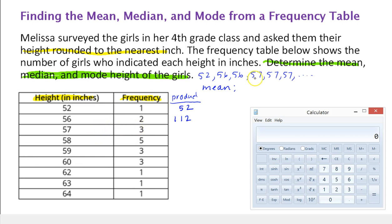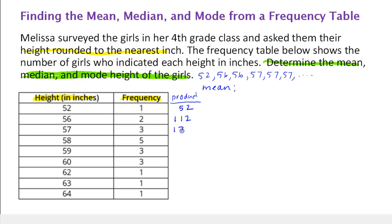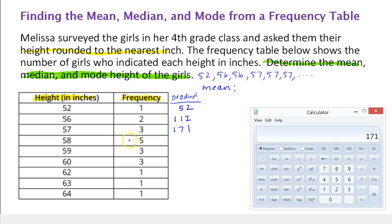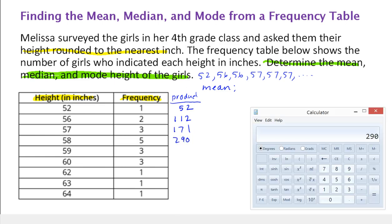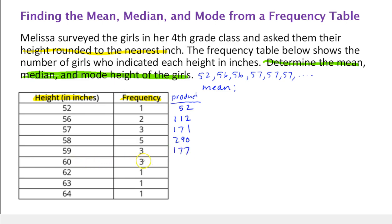Here we have three 57's. If we added these all together, that's equivalent to finding 3 times 57, which is 171. Now we have five 58's, which is 290. Three 59's, which is 177. Three 60's, that's 180. And notice there's one of each of these values, so we can just list them all once since their product is themselves.